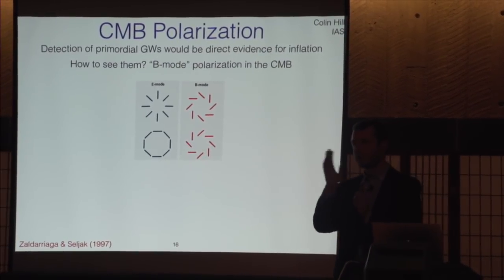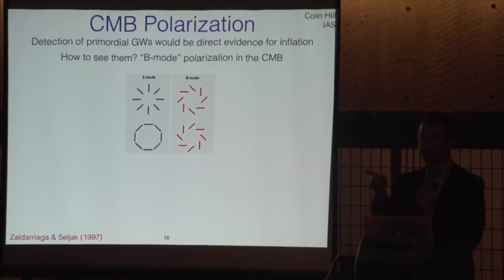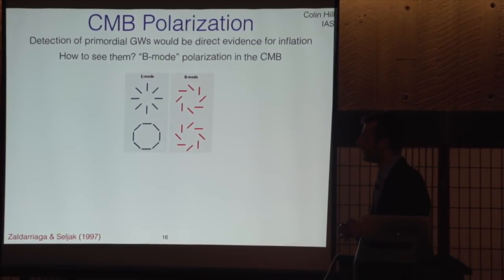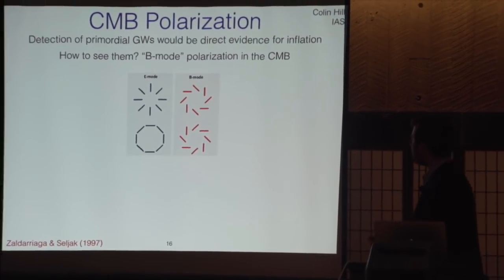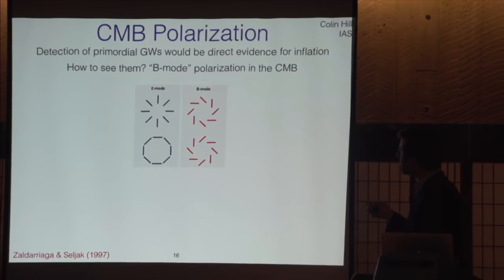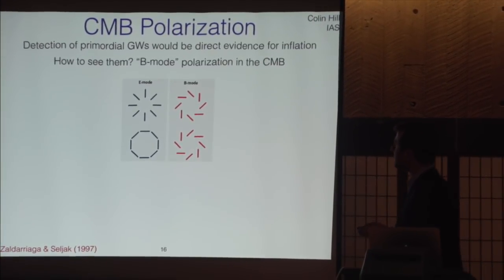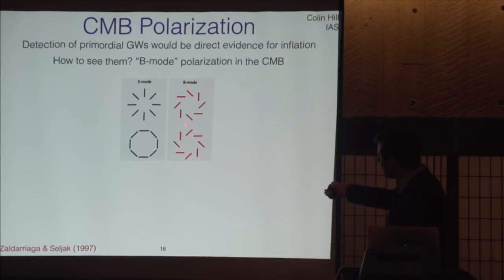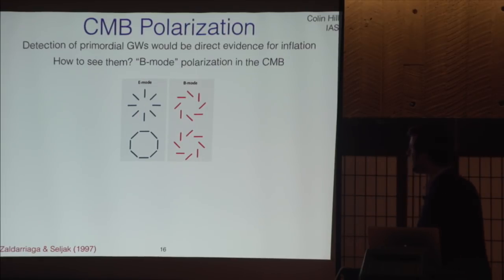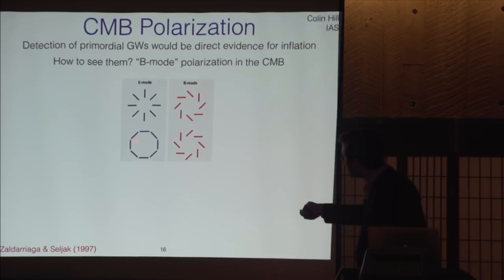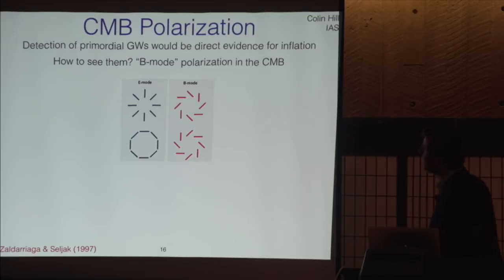It was pointed out by Matias Zaldarriaga and others in 1997 — Matias is a faculty member here at the Institute — that a unique signature of these primordial gravitational waves would be a B-mode polarization pattern in the CMB. Polarization is just the direction of the electric field associated with light as it travels through space. The B-mode is this swirly-looking pattern which can only be generated by gravitational waves in the early universe. We've detected the E-mode type pattern already, with radial or tangential vectors, but the B-mode pattern hasn't been detected.